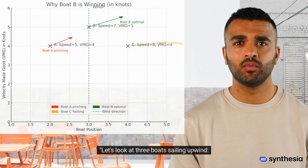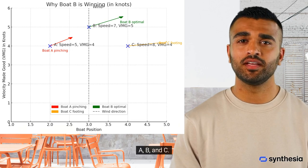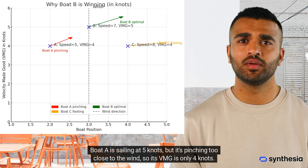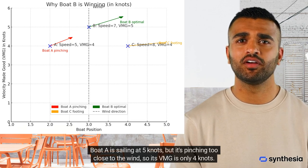Let's look at three boats sailing upwind, A, B, and C. Boat A is sailing at 5 knots, but it's pinching too close to the wind, so its VMG is only 4 knots.